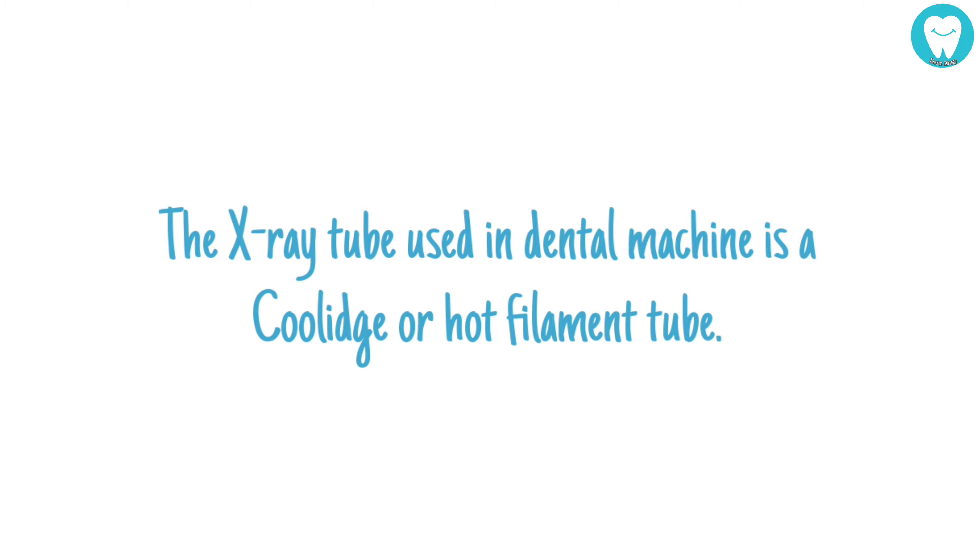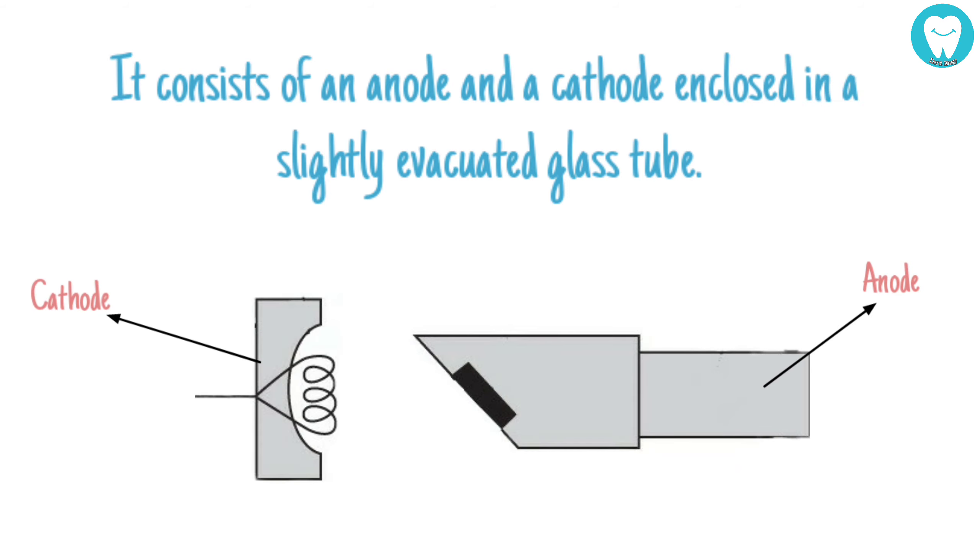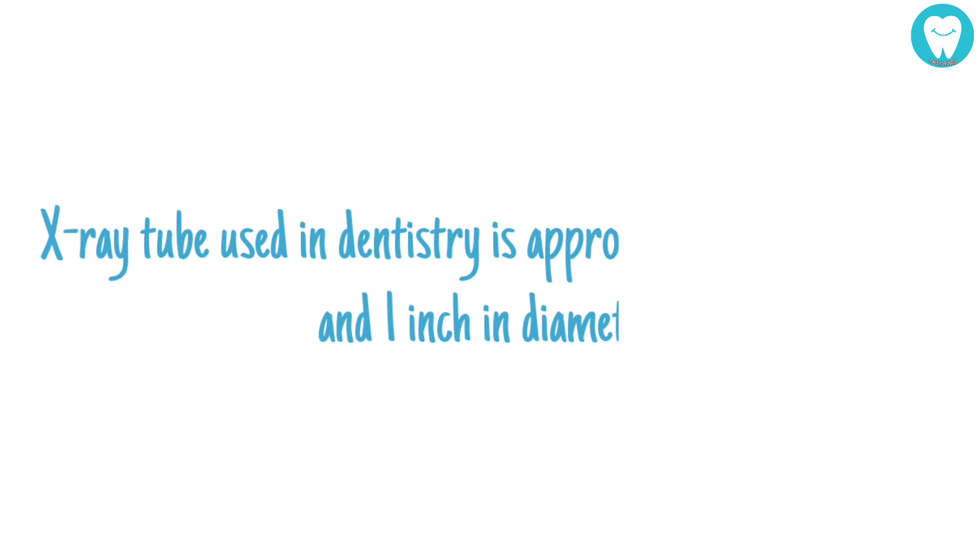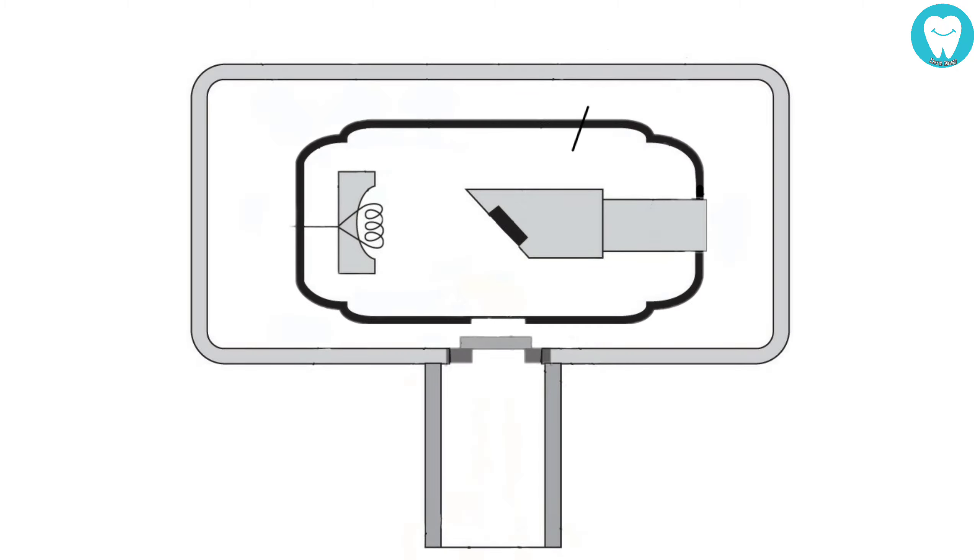The X-ray tube used in dental machines is a Coolidge or hot filament tube. It consists of an anode and a cathode enclosed in a slightly evacuated glass tube. The X-ray tube used in dentistry is approximately 15 centimeters long and 1 inch in diameter.